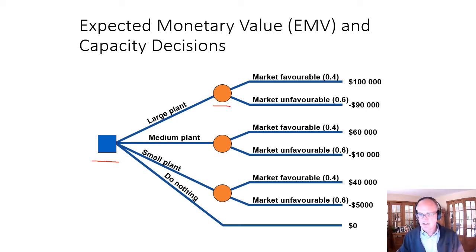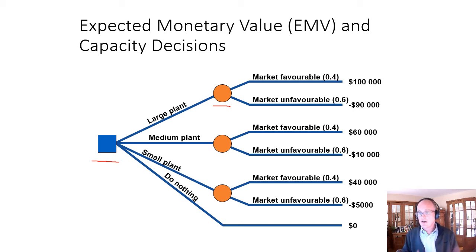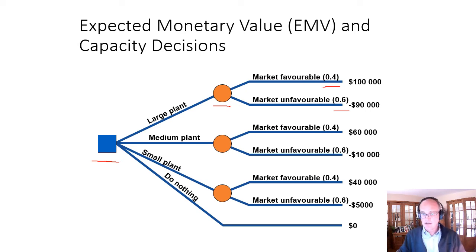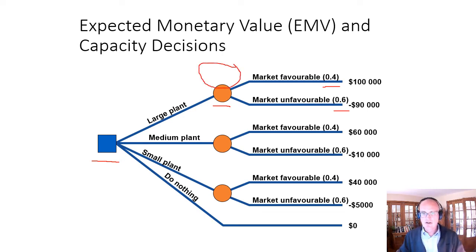The biggest mistake students make is treating uncertain outcomes as choices — saying 'I'll choose a large plant and choose a favorable market and make a hundred thousand dollars.' You can't choose something that is uncertain. Here we have a probability: the market is favorable with a probability of 0.4 and unfavorable with a probability of 0.6. We then come up with an expected monetary value: 0.4 times $100,000 plus 0.6 times negative $90,000, and we choose the alternative with the highest expected monetary value.